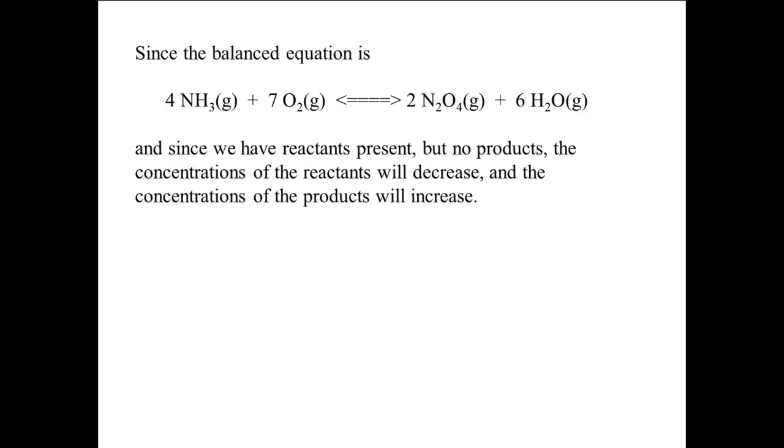We have the balanced equation. Since we have reactants present but no products, the concentrations of the reactants will decrease and the concentrations of the products will increase. So the changes are: NH3 decreases by 4X, O2 decreases by 7X, N2O4 increases by 2X, and H2O increases by 6X.